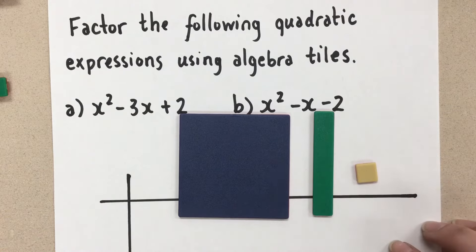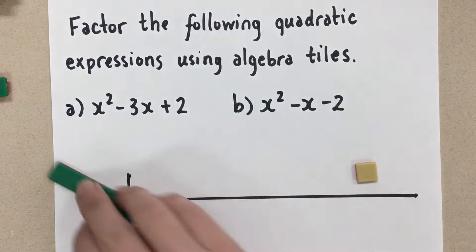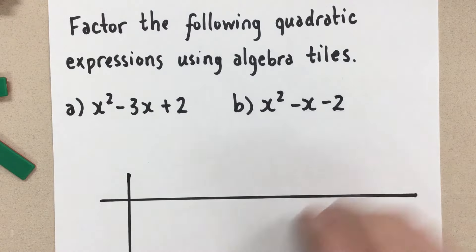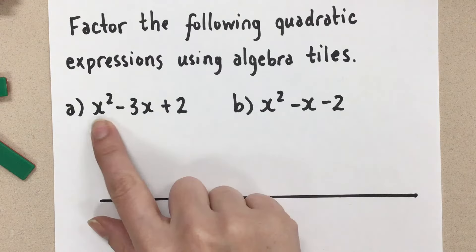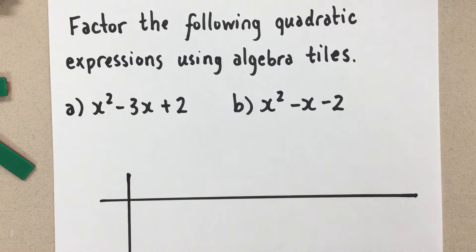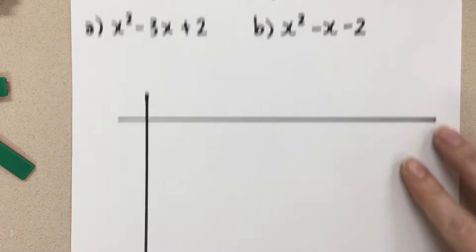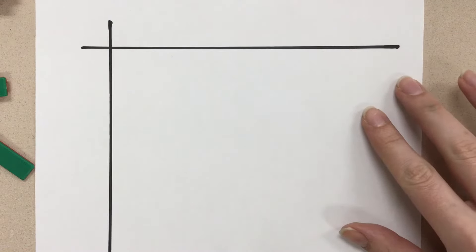So the first question we have is x squared minus 3x plus 2. We want to factor this using the tiles. So I have my multiplication table here.